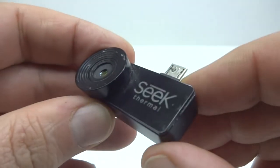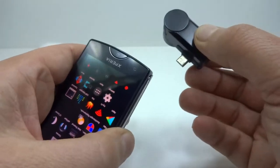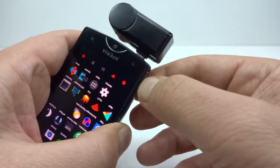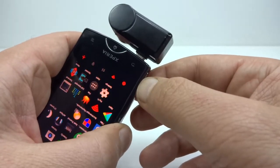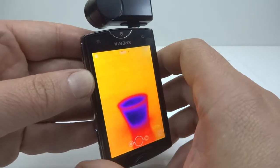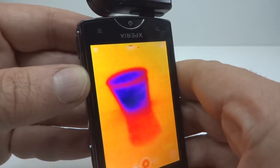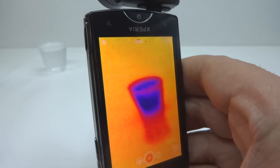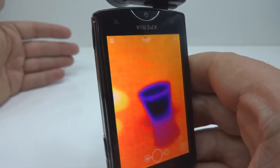I have here an inexpensive thermal camera from Seek. This plugs into an Android phone, and shows the world in thermal temperature as colour variation. This can be very useful for many things, such as checking insulation in your house,